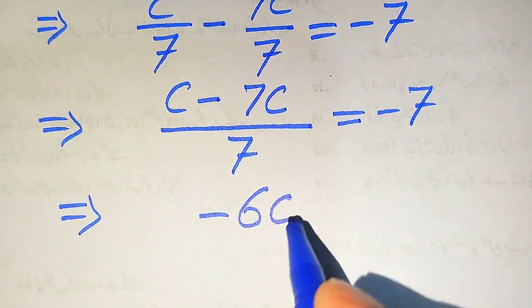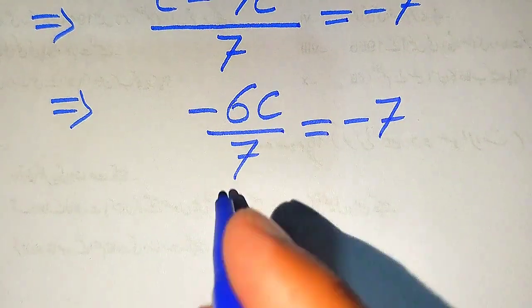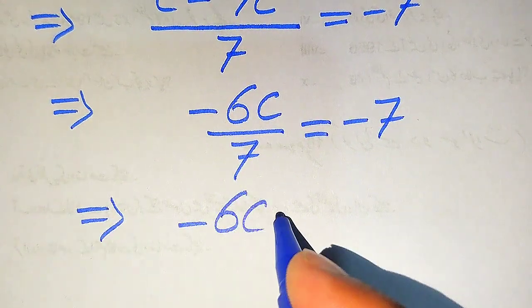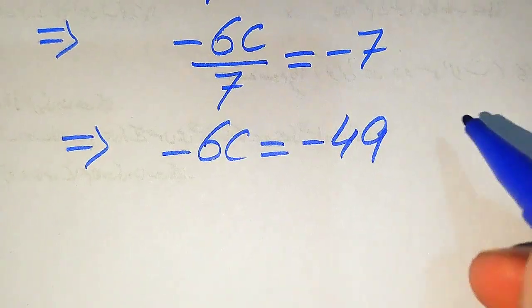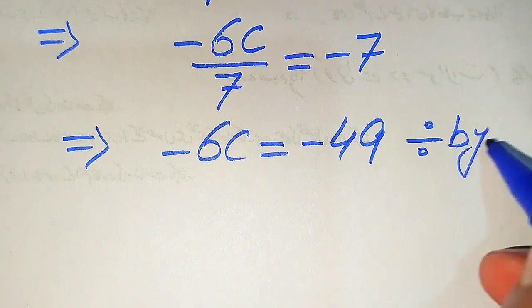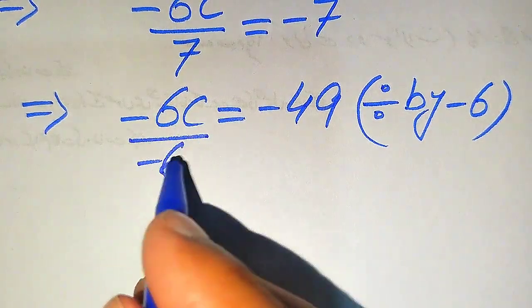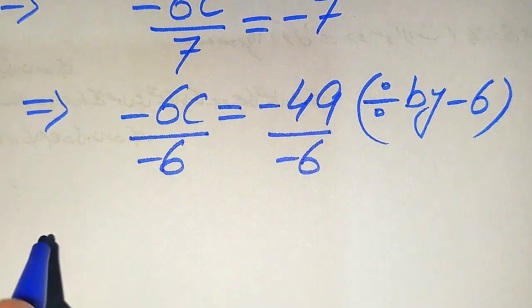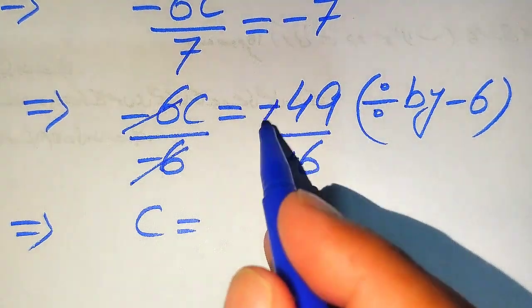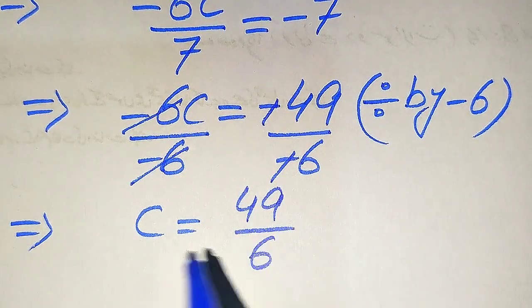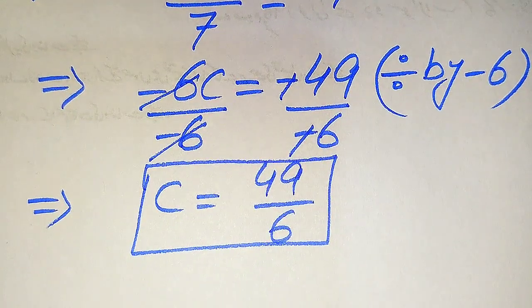This simplifies to minus 6C divided by 7 equals minus 7. Moving 7 to the right-hand side gives minus 6C equals minus 49. Dividing both sides by minus 6, the negatives cancel and we get C equals 49/6. Both methods give the same value of C equals 49/6, which is the final answer.